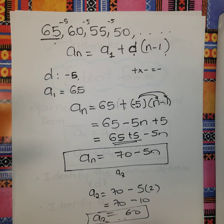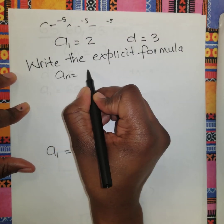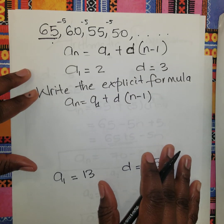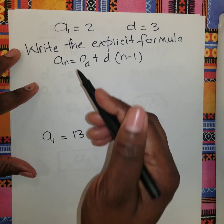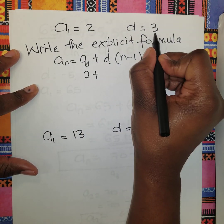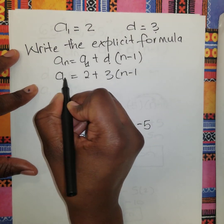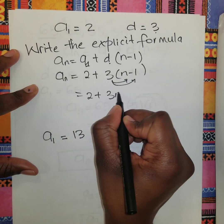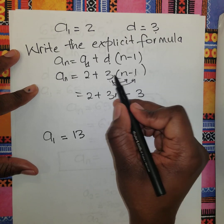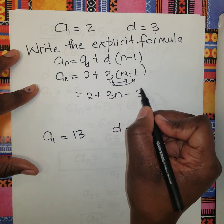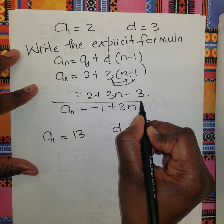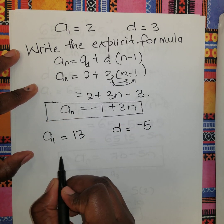Remember the general form: a_n = a_1 + d(n-1). They gave us a_1 = 2 and d = 3, so a_n = 2 + 3(n-1). Removing the bracket: 2 + 3n - 3, which is 3 times n minus 3 times 1. Simplifying: a_n = -1 + 3n. That's our explicit formula. It's pretty simple.